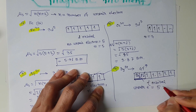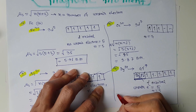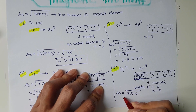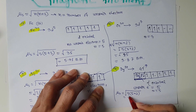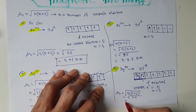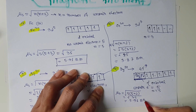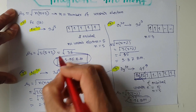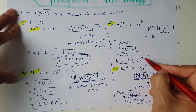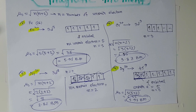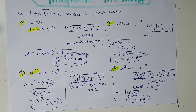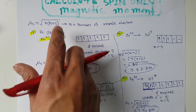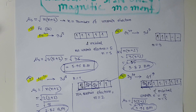With n = 5 for Dy³⁺, μs = √(5 × 7) = √35 = 5.91 Bohr magnetons. In summary: Fe³⁺ and Dy³⁺ both give 5.91 BM, Ni²⁺ gives 2.82 BM, and Cr³⁺ gives 3.87 BM. You just need to find the number of unpaired electrons using the d- or f-orbital filling rules, then apply μs = √(n(n+2)).